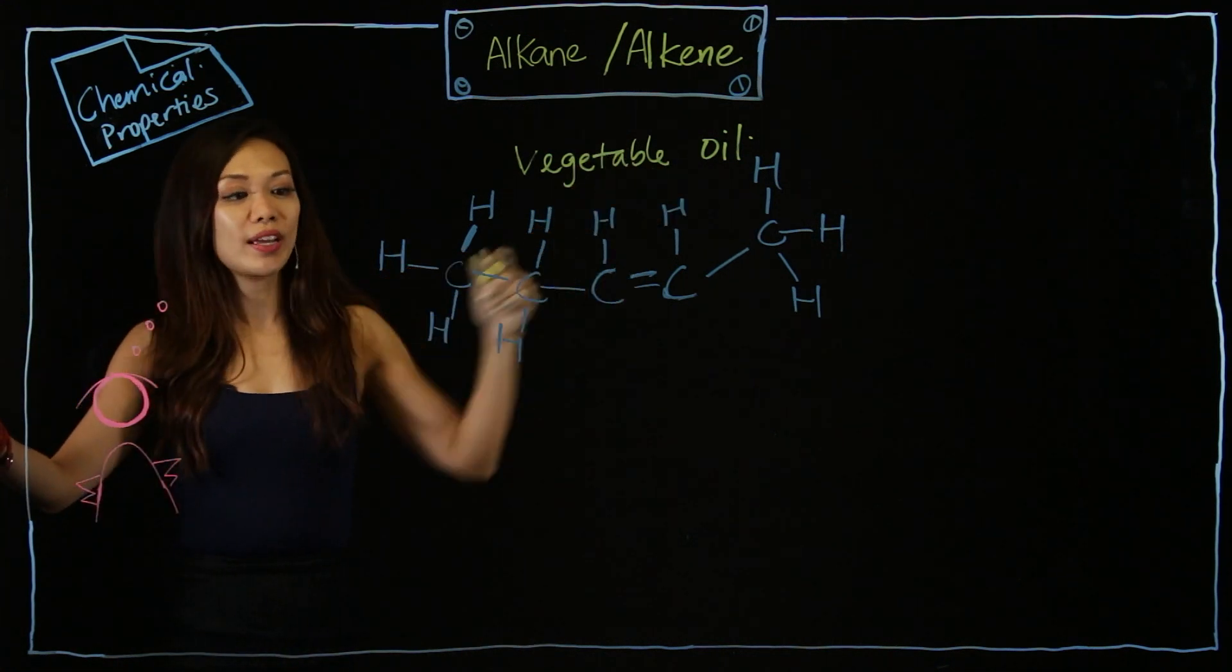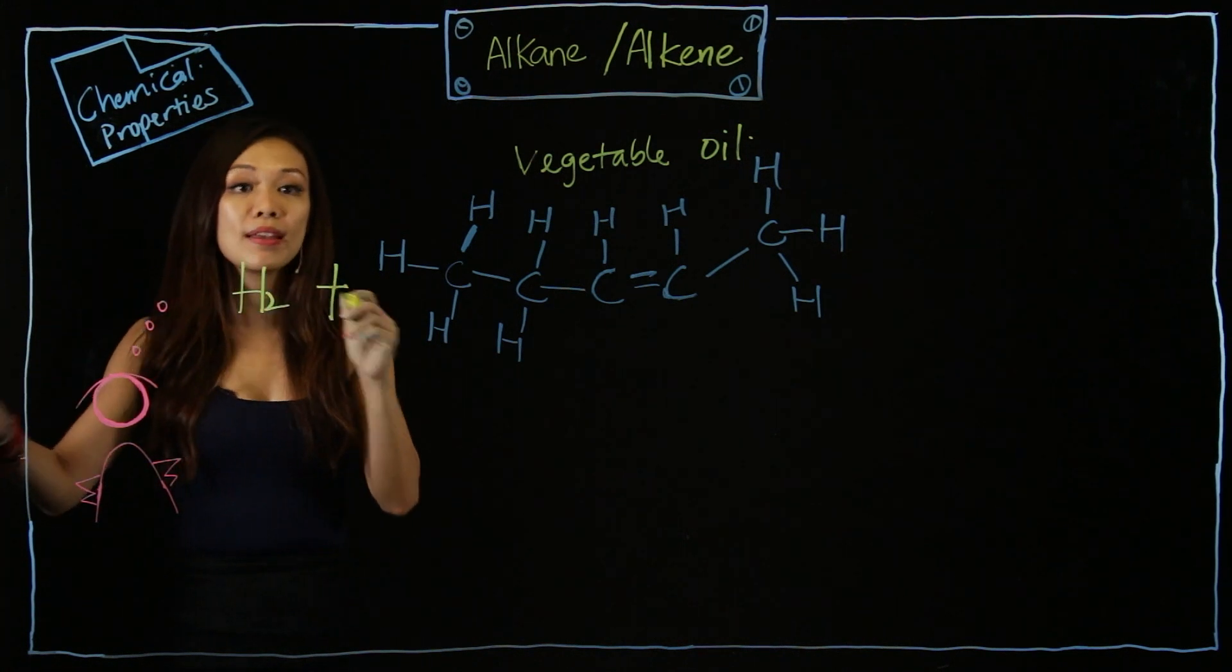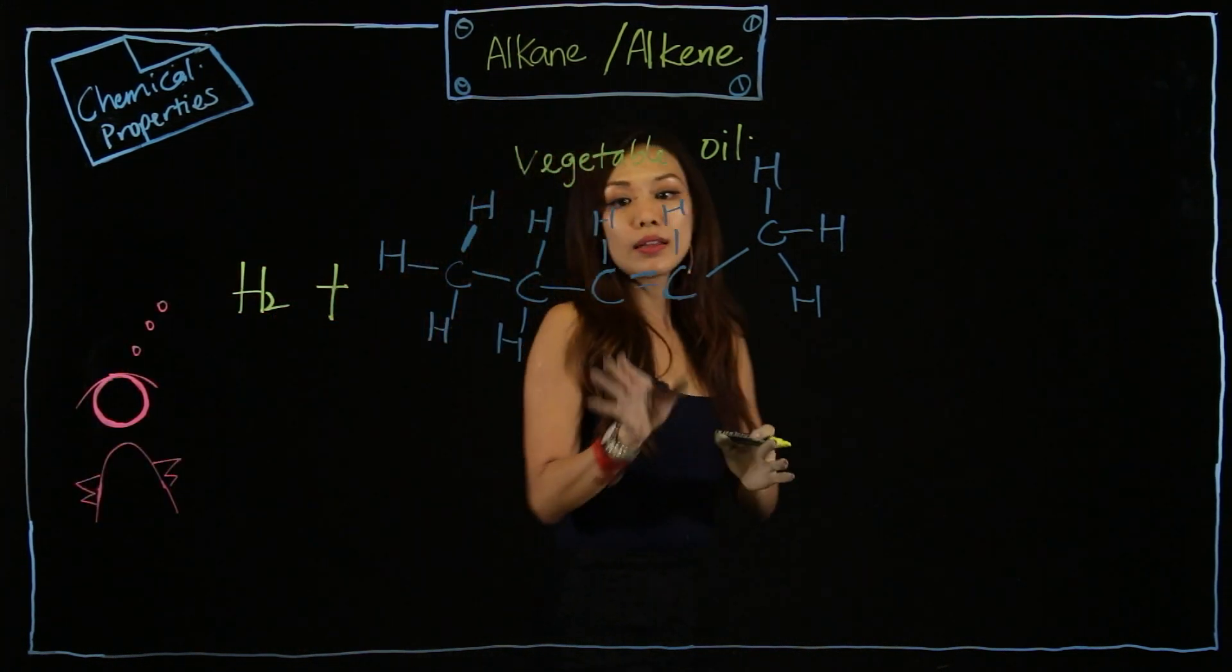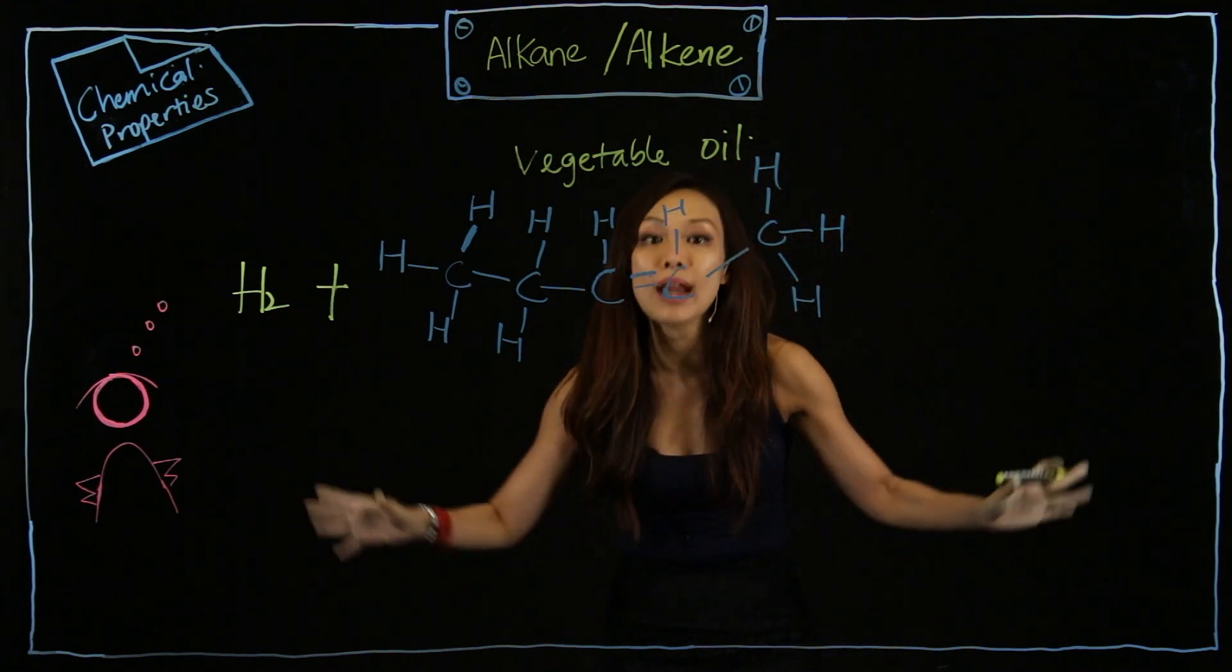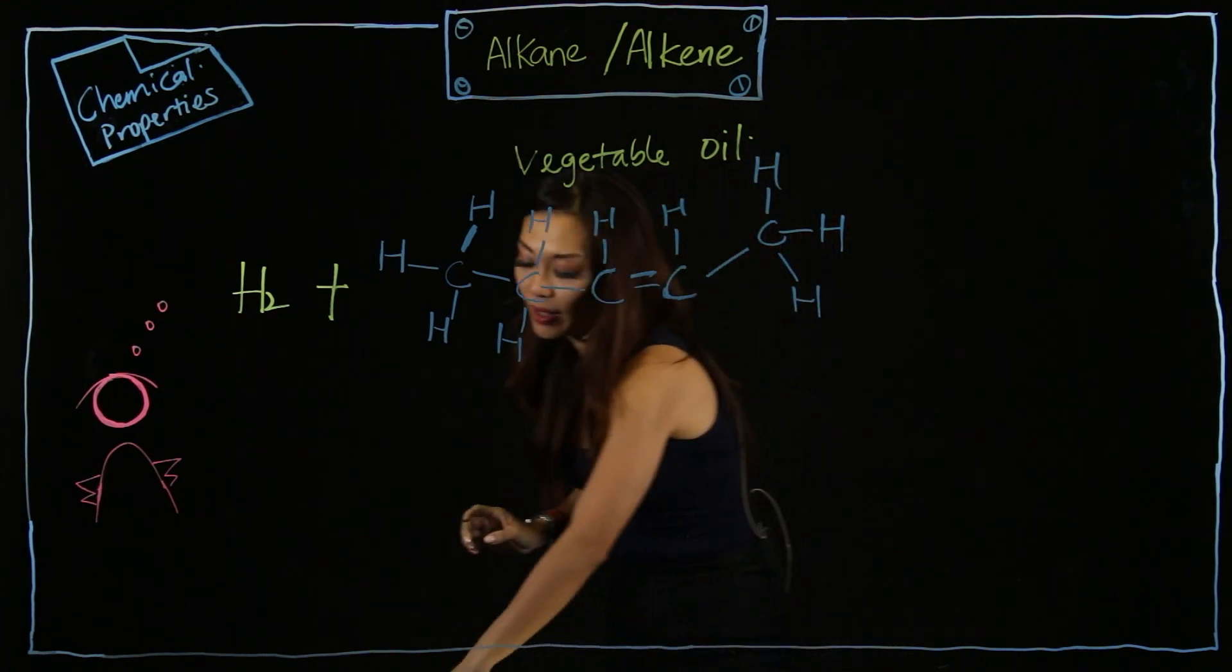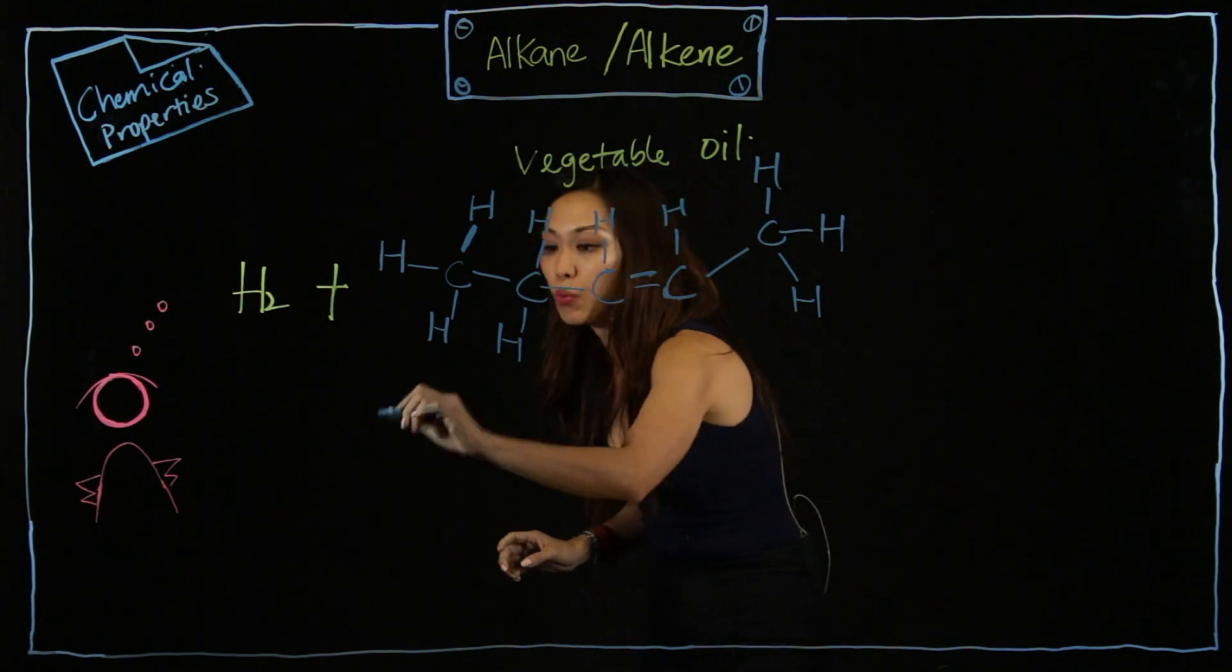Now how do you make margarine? Well, when hydrogen is pumped inside vegetable oil, the double carbon bond will open up, and that's where they will form something that looks like this. Watch.